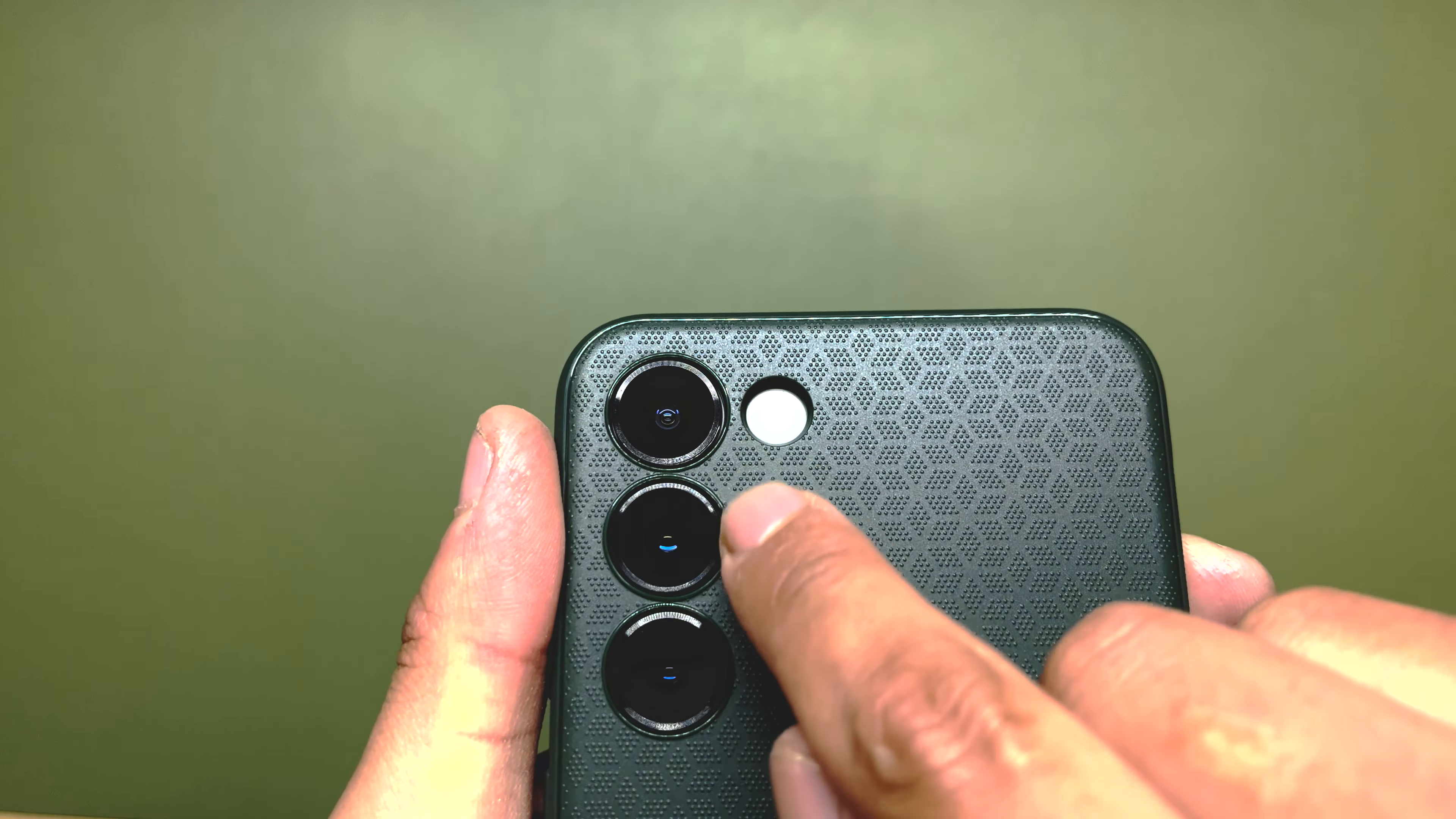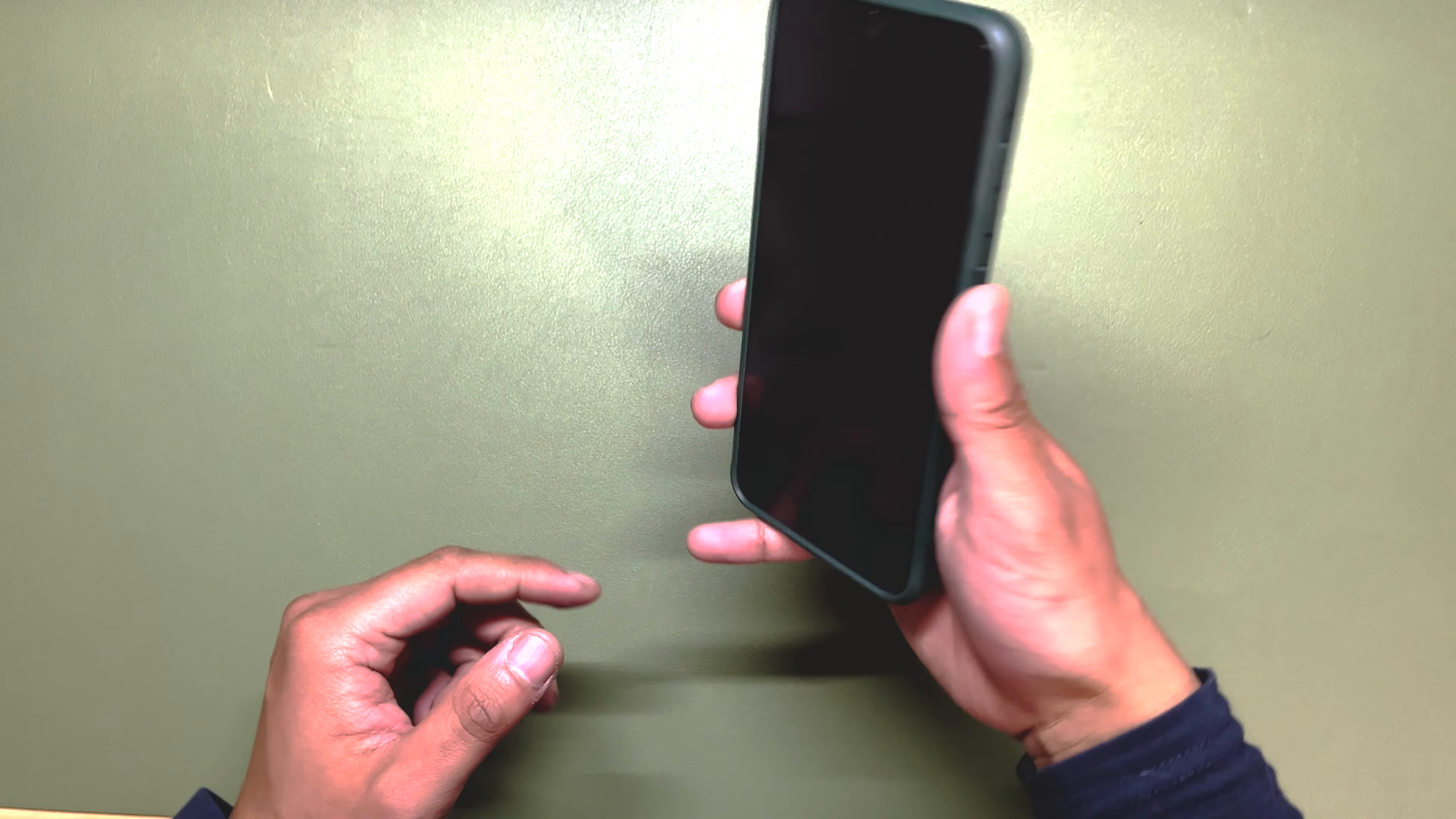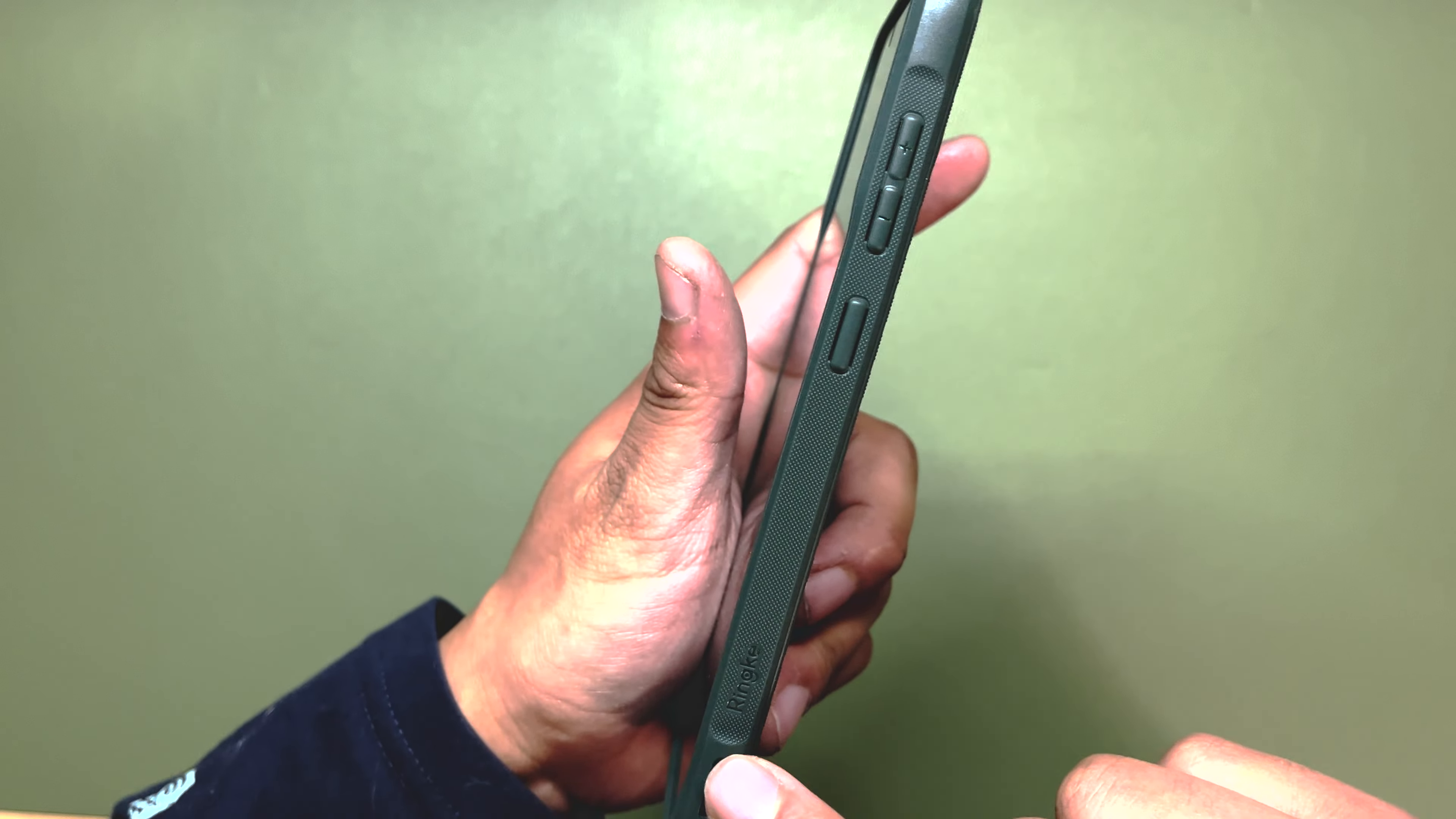The official Samsung case did fit with the camera lens protector, but whenever I would take off the case, the camera lens protector would come off with it. What I don't like about this case is it has thick bezels.